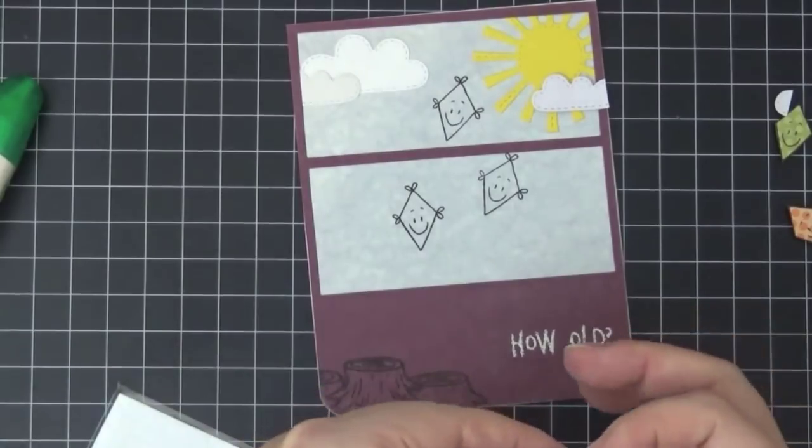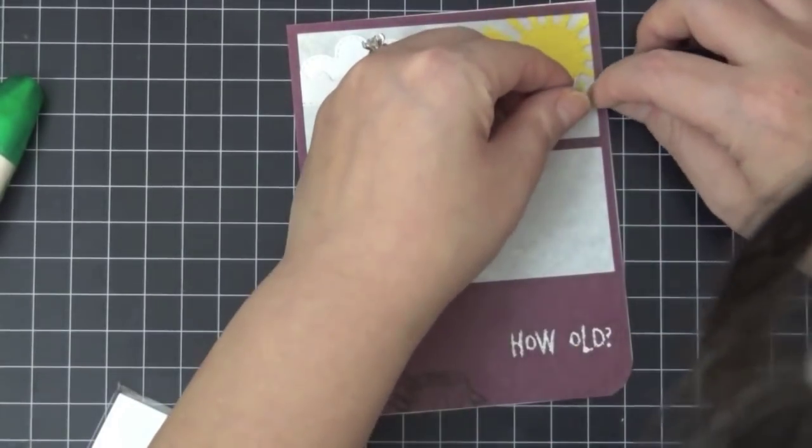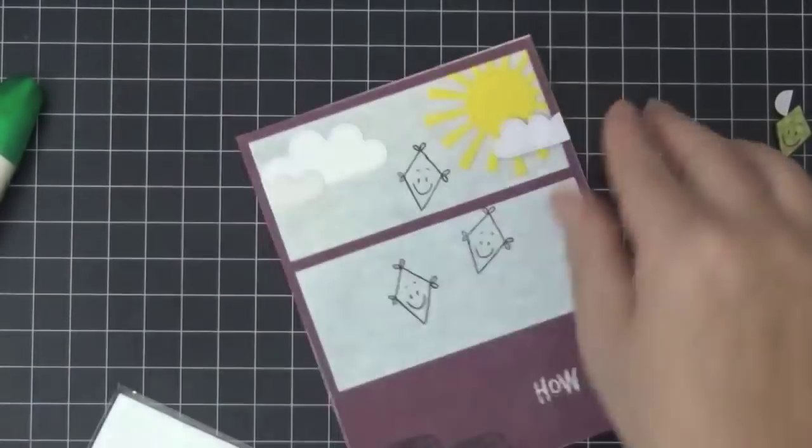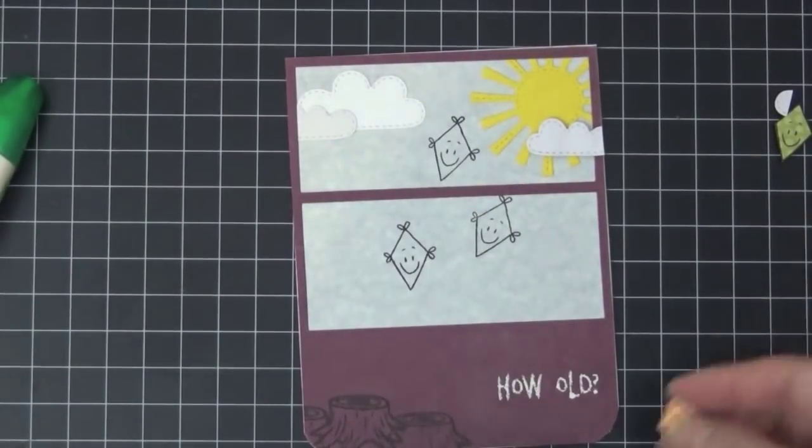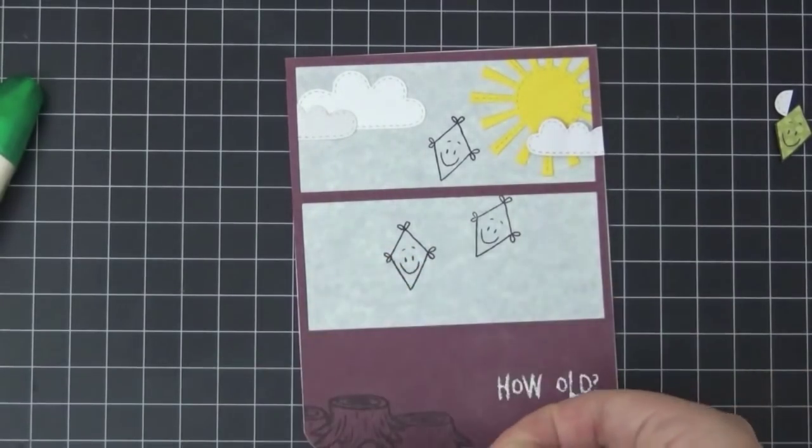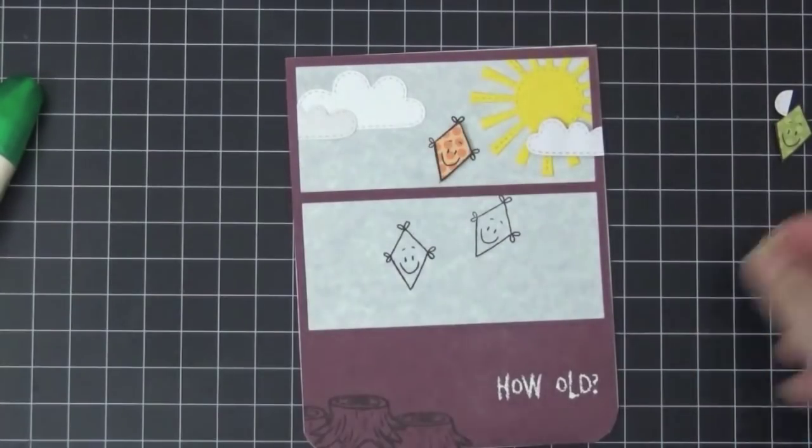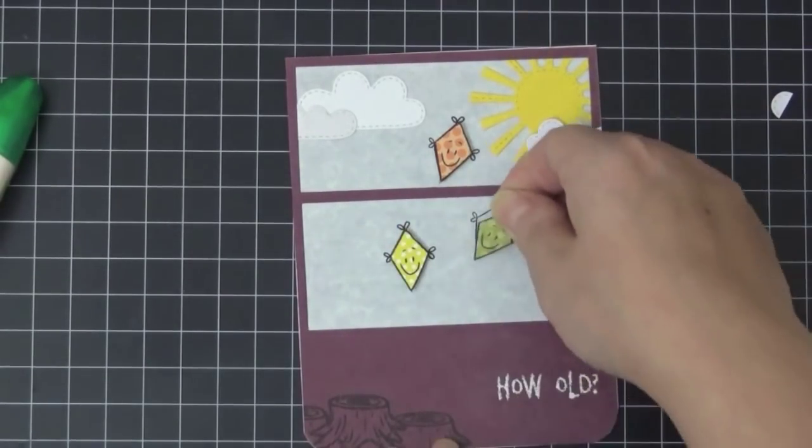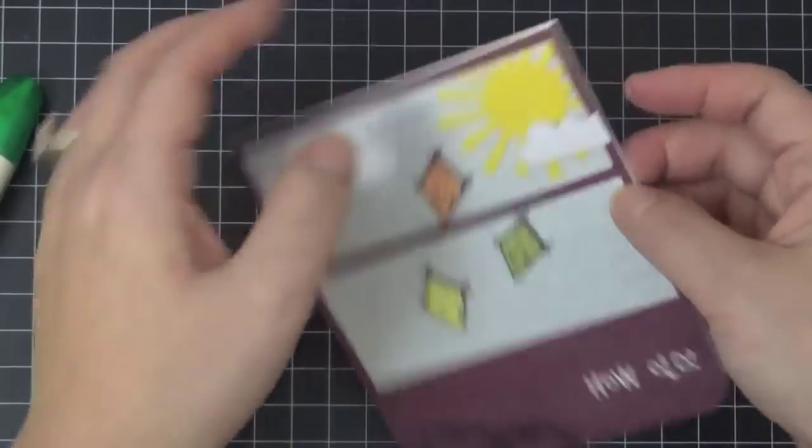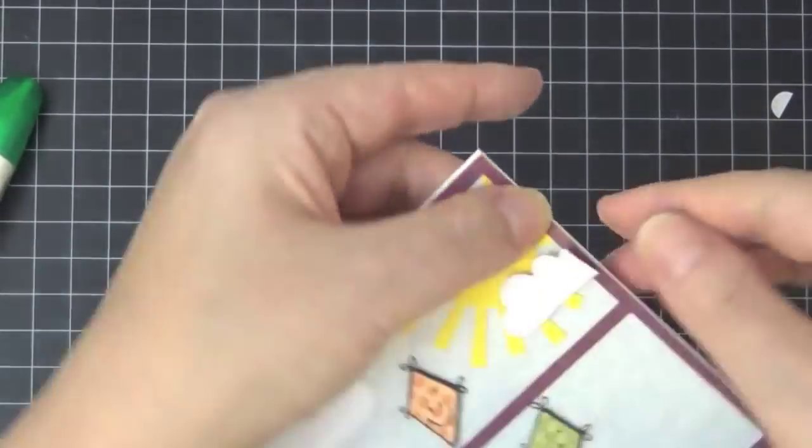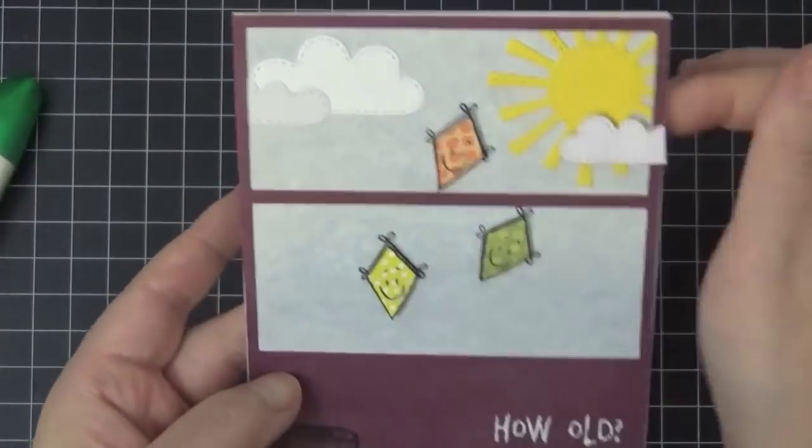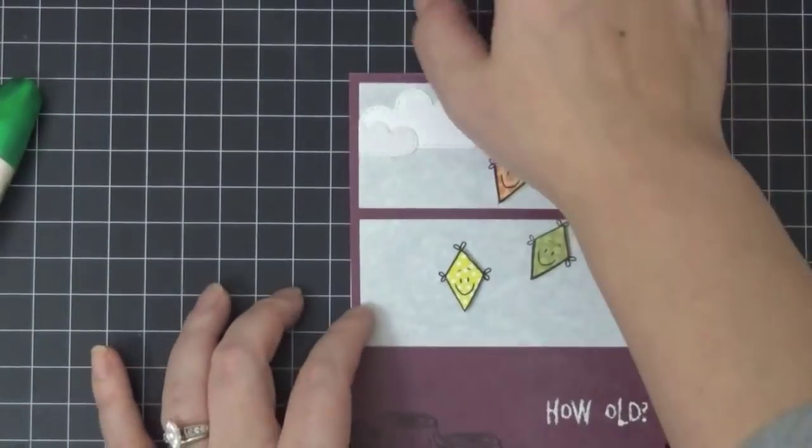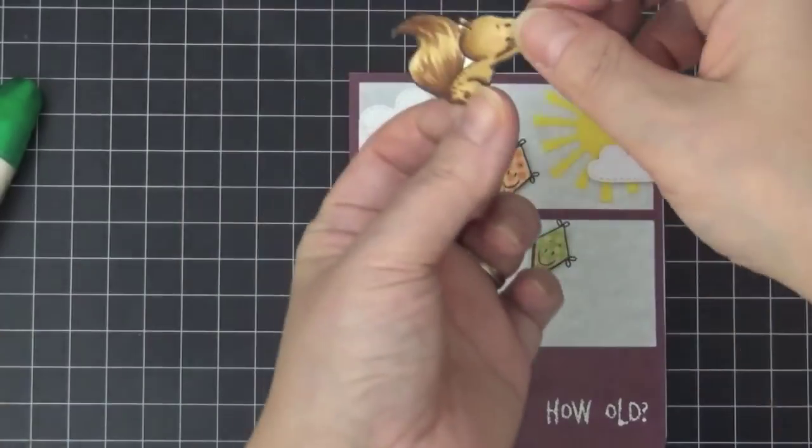And I'm using these super tiny little foam squares here. I think it's by Best Creations, because I don't want to cut my foam to like super small. And then I'm going to attach my kites as well. I went around the edges of the kites with the black marker as well. Here the clouds were a little bit off and I needed to fix that. And then my squirrel.